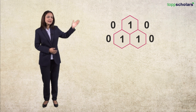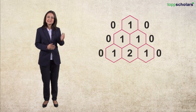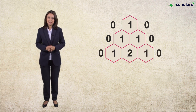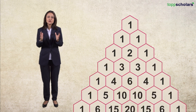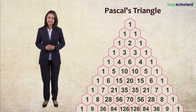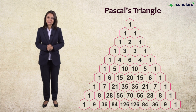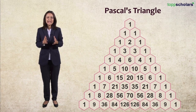To get to the next row, you need to follow the same procedure. You can have infinite rows in a Pascal's Triangle. But what is so unique about this triangle full of numbers?